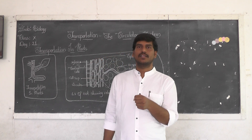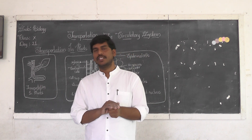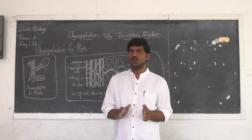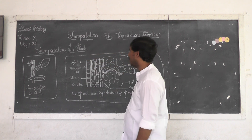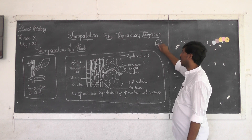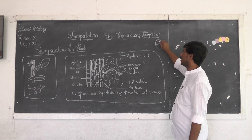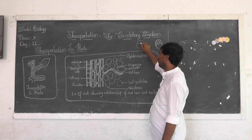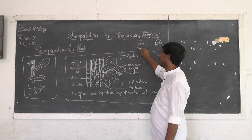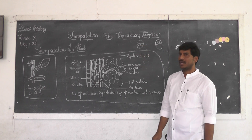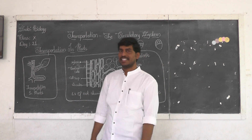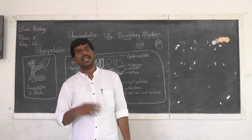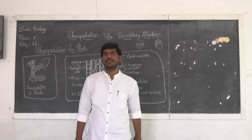I hope you have observed the transverse section of root and transverse section of stem in class 9. In case of the root, xylem vessels are exterior — they are present on the outside. In case of the stem, xylem vessels are interior. So in roots, xylem vessels are exterior and phloem is interior, whereas in the stem, xylem vessels are interior and phloem vessels are exterior.